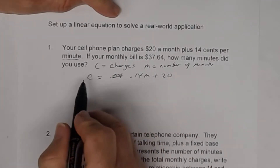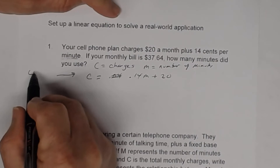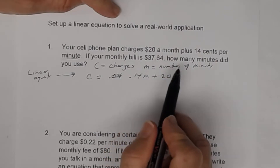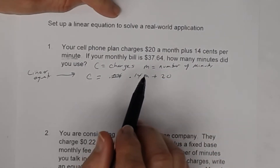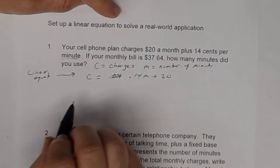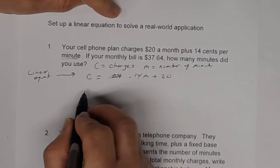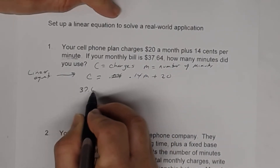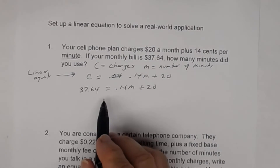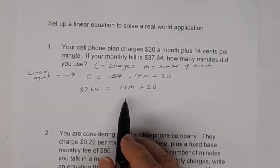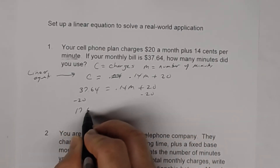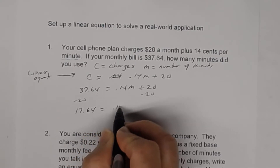So that's our linear equation. Now we're going to use this information to help us find how many minutes we used. If our charges are $37.64, how many minutes did we use? We're going to let C equal $37.64. So 37.64 equals 0.14 times M plus 20. And then it's just a matter of solving this linear equation for M. Let's subtract 20 from both sides, and I get 17.64 equals 0.14M.